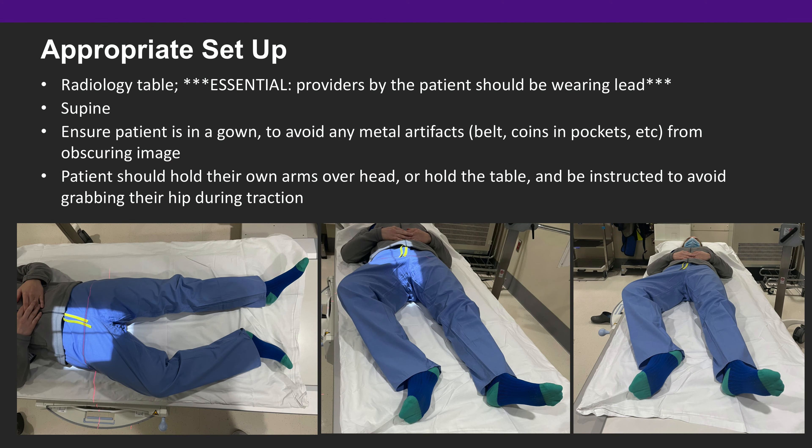To perform a traction view of the hip, the patient should be positioned supine on the radiology table. It is important to ensure the patient is in a gown to avoid any metal artifacts such as belts, coins, and pocket contents from obscuring the image. The patient should be instructed to hold their arms overhead or hold the table, and be warned to avoid grabbing their hip from pain during the traction view.